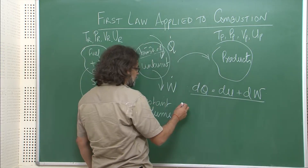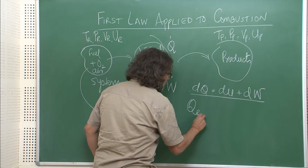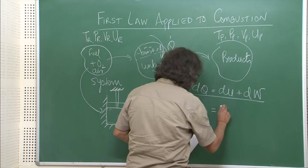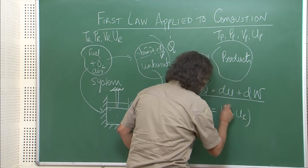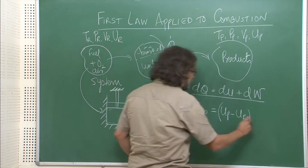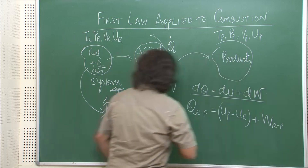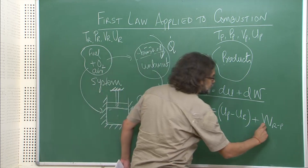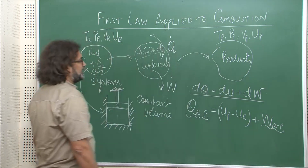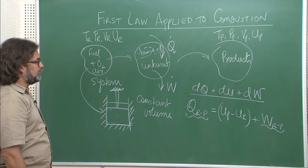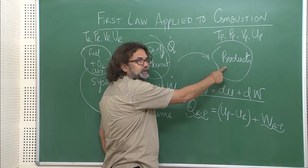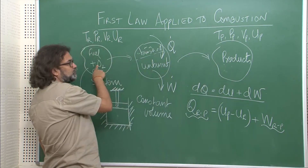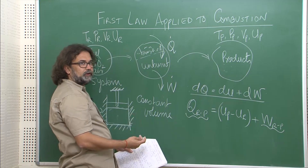Applying this, we can write: Q(R to P) = (Up − Ur) + W(R to P). When the system goes from reactants to products, this is the net heat exchange and this is the work done in the process. Naturally, for a combustion reaction, the energy of the products comes out lower than the energy of the reactants, and therefore the difference between them is what you get as the heat of reaction or heat of combustion.